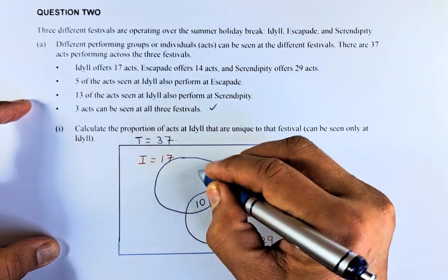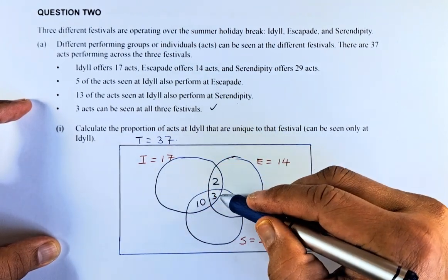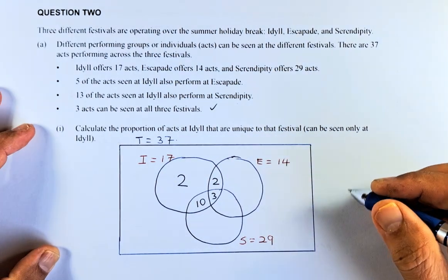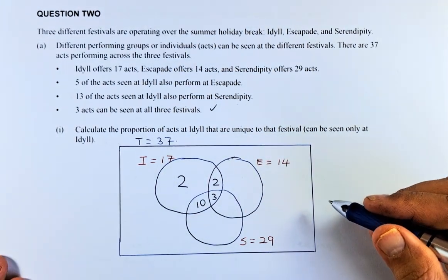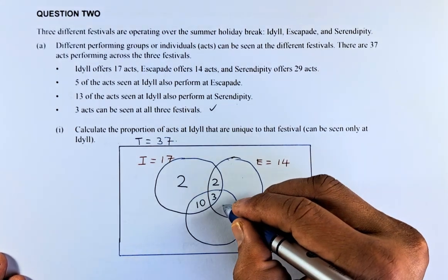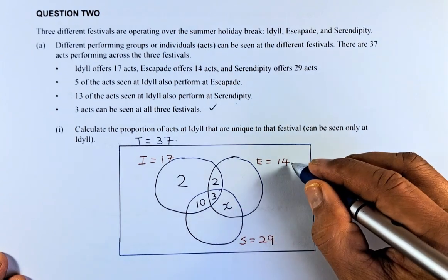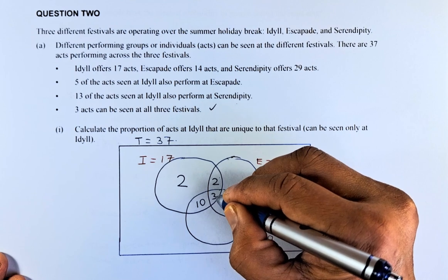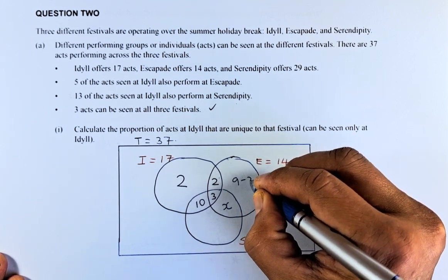The first region you can find is this region here because the total is 17. So 17 minus 2 minus 3 minus 10, that has to be a 2. To get this region is a bit more tricky. We have to do a little bit of algebra. So we let this be the unknown X. If this is X, this whole region is 14. So 14 minus 2 minus 3 minus X. So 14 minus 2 is 12, 12 minus 3 is 9. So this region has to be 9 minus X.